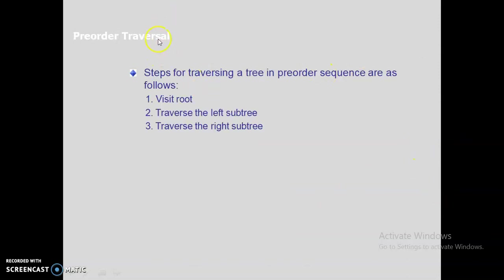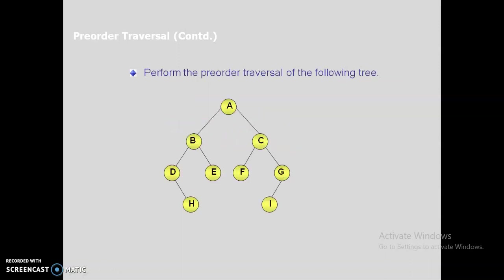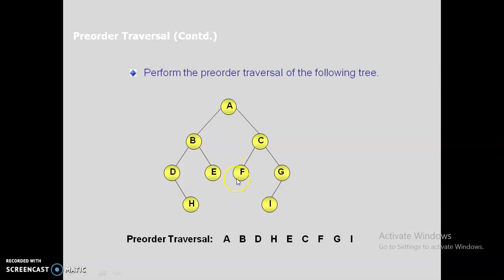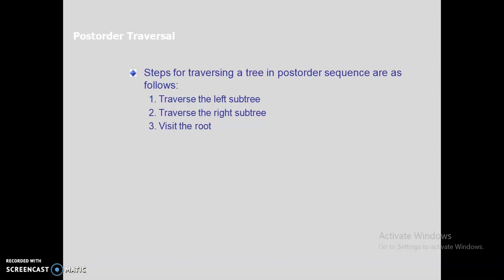In pre-order traversal, the order is D, L, R — first visit the node, then traverse the left subtree in pre-order manner, then traverse the right subtree in pre-order manner. Using the same tree: first record A, then B. Since we visit the node first, then go left, we get D. There is no left child of D, so we move to right: H. Go back to B — already recorded — then check right: E. Go back to A — already recorded — then right subtree: C, then left subtree of C: F, then G, then I. That is the pre-order traversal: A, B, D, H, E, C, F, G, I.